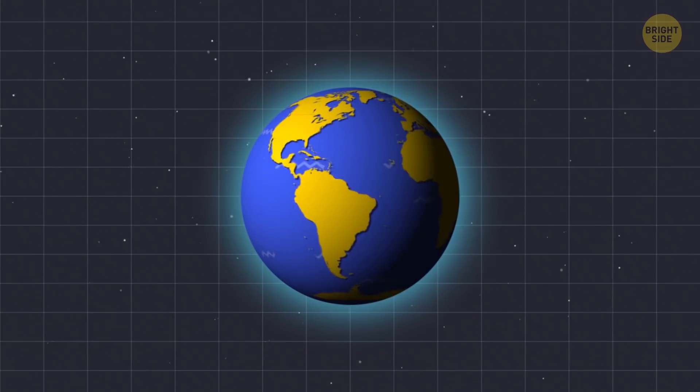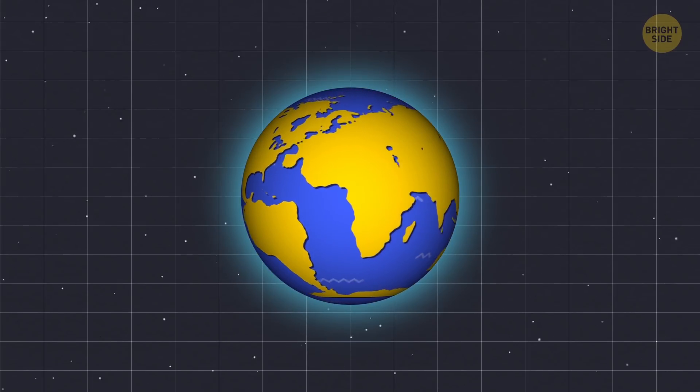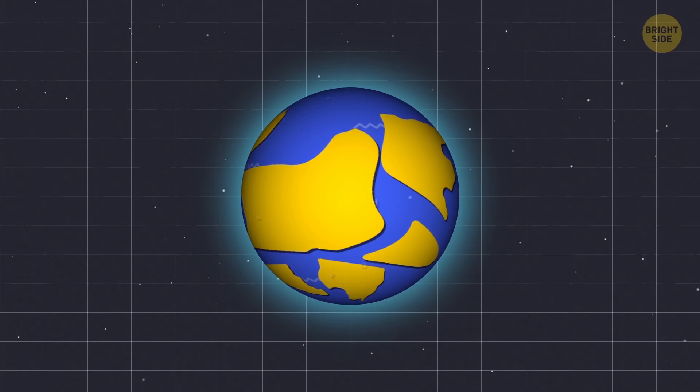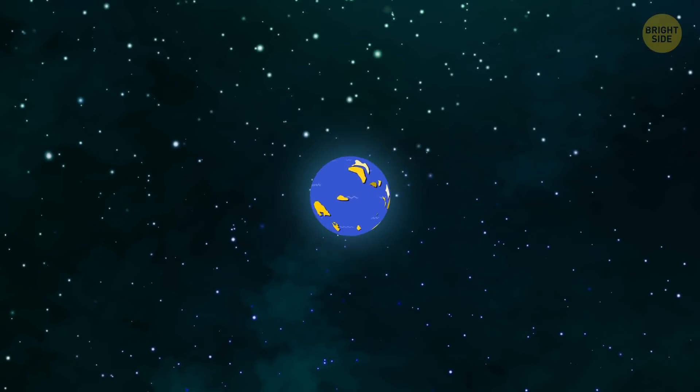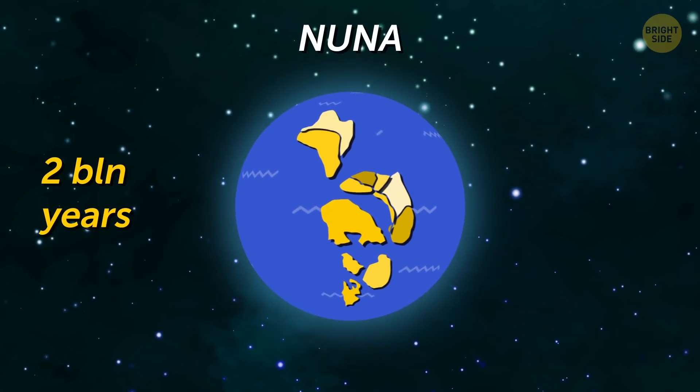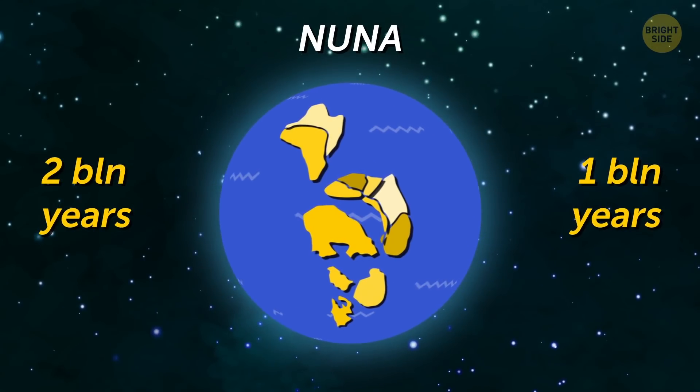Our continents connect to form a huge landmass, our oceans connect to form a superocean, and then they split. The first supercontinent ever was Nuna. It appeared about 2 billion years ago and broke apart roughly 1 billion years later.